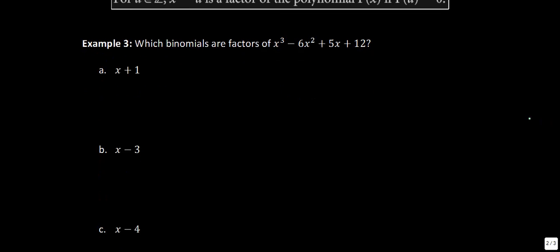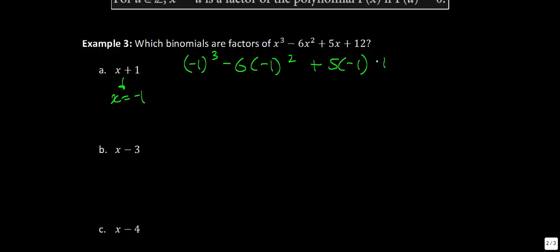This is very useful when dealing with factoring questions involving cubic, quartic, and quintic functions. This question asks which binomials are factors. If you substitute in and find a remainder of 0, it must be a factor. Setting x plus 1 equal to 0 gives x equals negative 1. Substituting negative 1: negative 1 cubed minus 6 times negative 1 squared plus 5 times negative 1 plus 12 gives negative 1 minus 6 minus 5 plus 12, which equals 0. So x plus 1 is a factor.